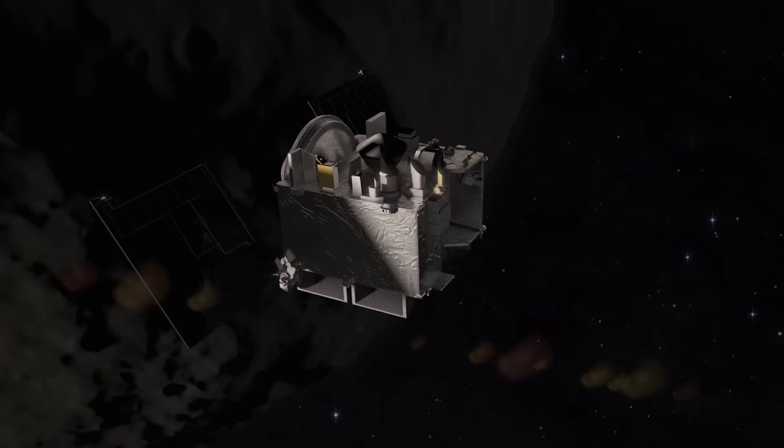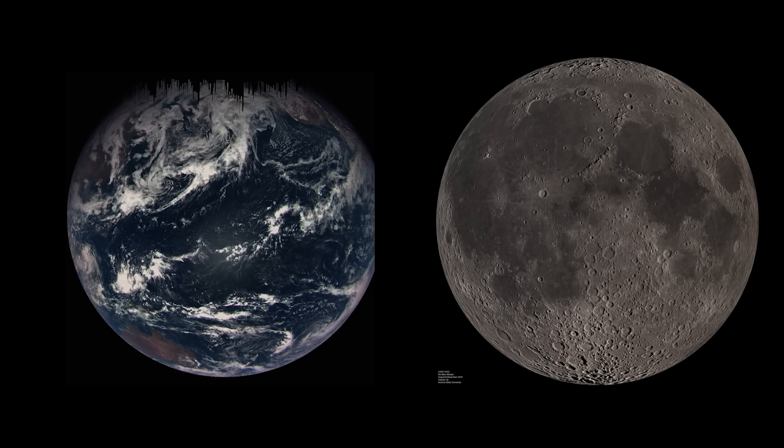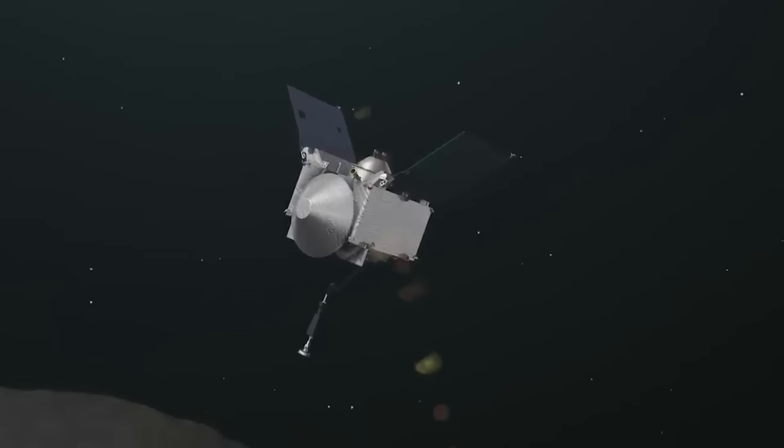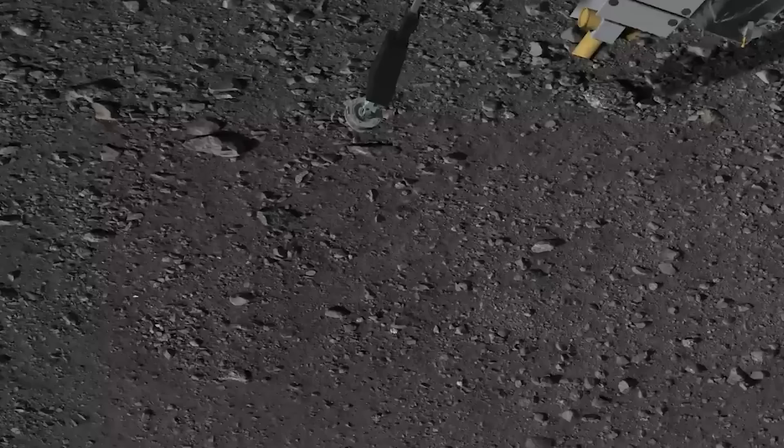Along the way, the spacecraft took some incredible images of Earth and its moon, from a distance of a little more than 3 million miles. The second and final major deep space maneuver was taken on June 28, 2018, as it made a series of successful asteroid approach operations to put it close to Bennu, where it safely arrived on December 3, 2018.